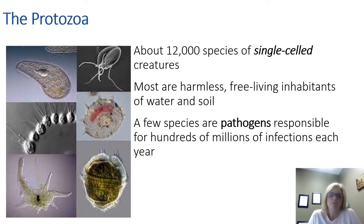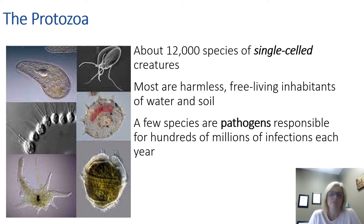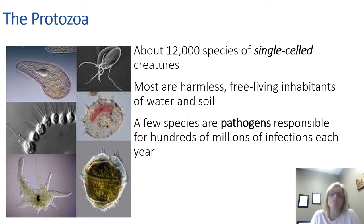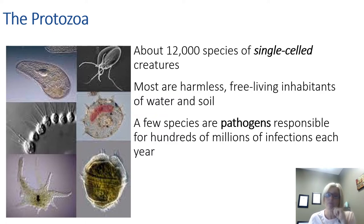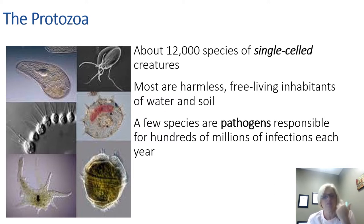Moving on to protozoa — some of my favorites. The name comes from the Greek for 'first animals.' They're characterized more by similar physical characteristics than by how genetically related they are. We've got at least 12,000 species of single-celled creatures. Most are harmless, free-living inhabitants of water and soil, but a few are pathogenic, giving us millions of infections each year. Here you can see some different ones — an amoeba, a dinoflagellate, and others.